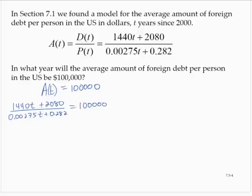Now, we should note when that left-hand side is undefined, but it's probably not going to be relevant to this problem. So we will simply multiply through by the LCD. And the LCD is just that denominator on the left: 0.00275t plus 0.282, multiplying through on the left-hand side and on the right-hand side.